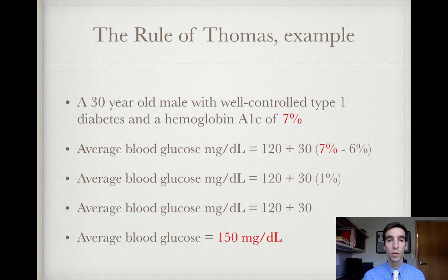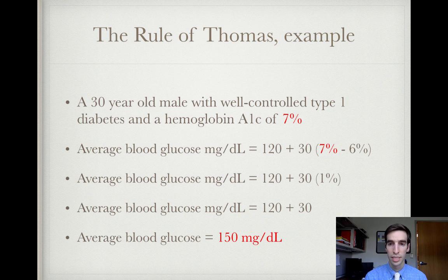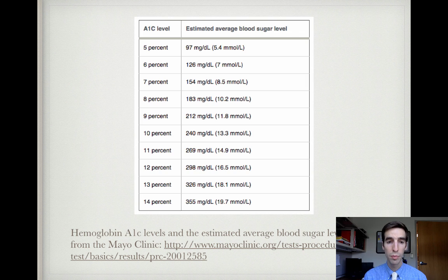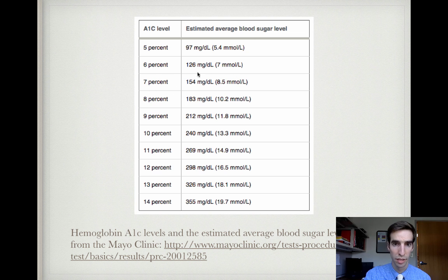For example, a 30-year-old male with well-controlled type 1 diabetes and a hemoglobin A1c of 7%: average blood glucose equals 120 plus 30 times (7 minus 6). Seven minus 6 is 1, times 30 equals 30, plus 120 gives an average blood glucose of 150 milligrams per deciliter. Comparing that to what the Mayo Clinic published, a hemoglobin A1c of 7% correlates to an estimated average blood sugar of 154 milligrams per deciliter — so with the Rule of Thomas, we're relatively close.